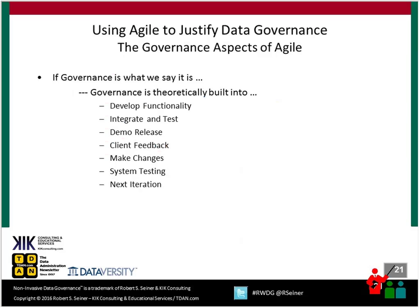If governance is the execution and enforcement of authority, and we look at the agile iterative approach — with steps like developing functionality, integrating and testing, demo release, client feedback — in order to do those things effectively, we want the right people at the right time for the right effort. Governance theoretically should already be built into many steps of the iterative agile effort. If we can highlight that and get people to understand they're not coming from opposite ends of the spectrum, we can apply governance where it's needed within agile efforts without interfering with them.